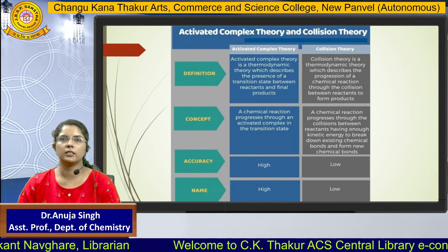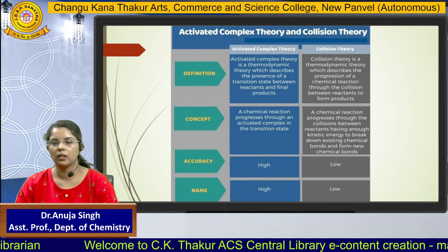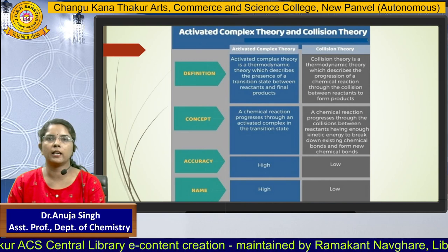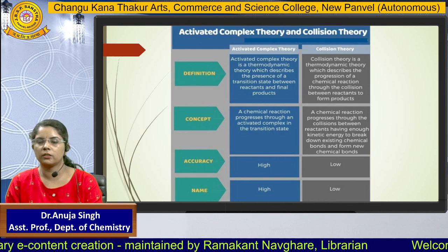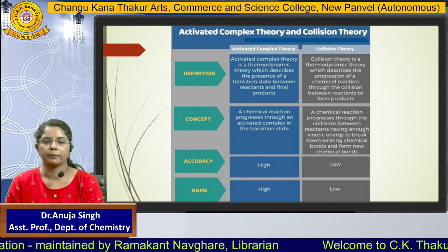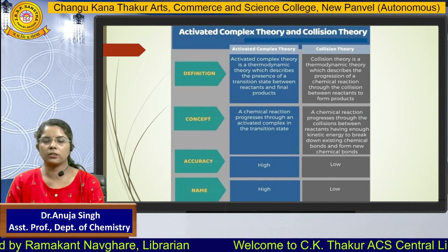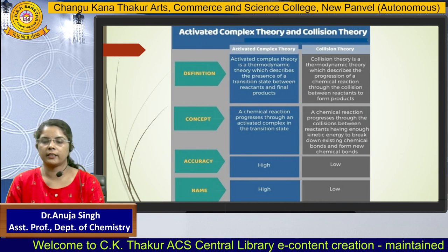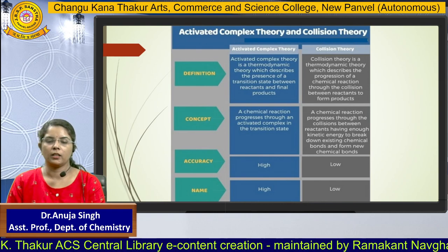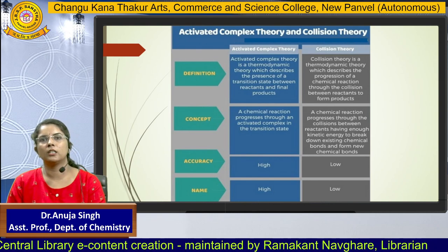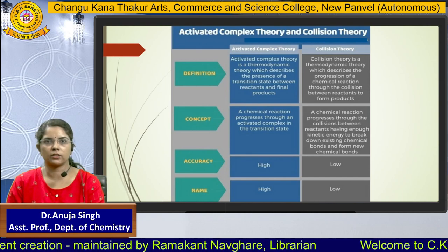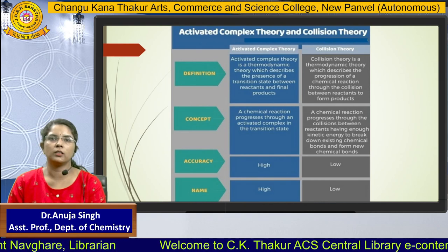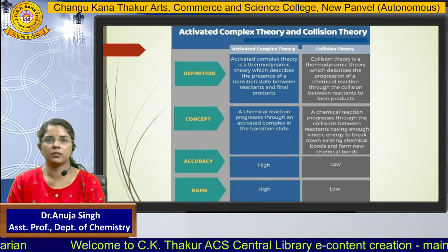The difference between activated complex theory and collision theory: activated complex theory is a thermodynamic approach that describes the presence of a transition state between the reactant and product, while collision theory describes the progress of a chemical reaction through the collision of reactants to form product. Concept-wise, activated complex theory involves an activated complex in the transition state, whereas collision theory involves collision between reactants having sufficient kinetic energy and proper orientation. In terms of accuracy, activated complex theory gives higher accuracy for the rate of reaction, while collision theory gives lower accuracy. Thank you.